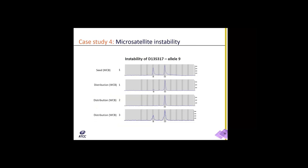In the fourth case study on microsatellite instability: as mentioned, we perform STR analysis on donor material and compare it to all subsequent stocks — the working cell bank and the master cell bank — looking for instability. In this example, at D13S317 allele 9, we observed instability in the seed stock that was reduced in the first distribution stock, disappeared by the second, and reappeared in the third distribution stock. How you culture and manipulate your cells can have an effect on instability, which could also be an inherent feature of this particular locus.